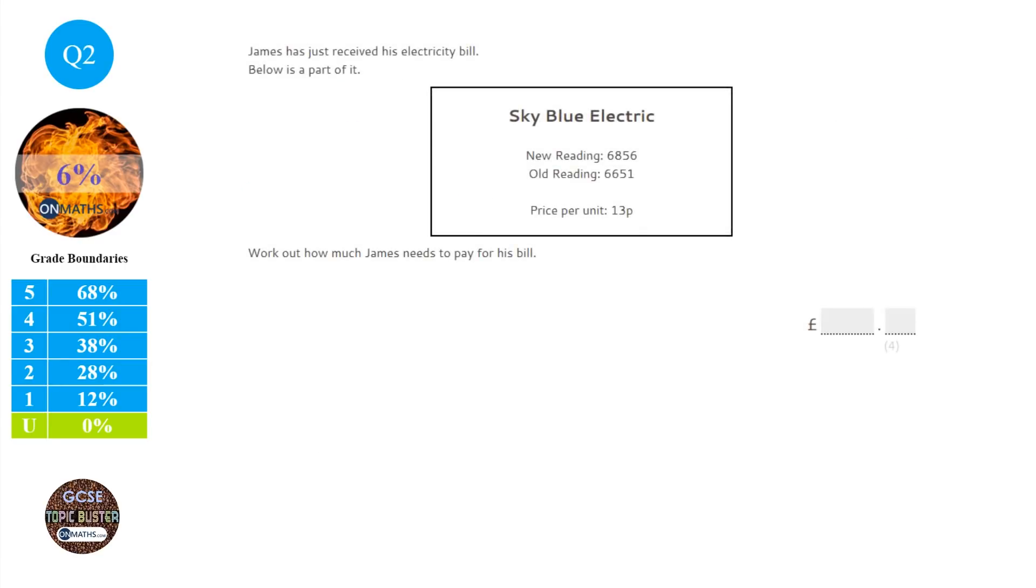Okay, so this question says that we have an electricity bill and we have two readings from the electric meter. And we're given the price per unit and we're asked to find out how much this person, James, paid. So the old reading is where the meter started. So it started at 6,651. And the new reading is where it ended. So the first thing we've got to do with this question is figure out how many units were used. So to do that, we're going to take them away from each other. Okay, 6 take away 1 is 5. 5 take away 5 is 0. 8 take away 6 is 2. 6 take away 6 is 0. So we've got 205 units used.